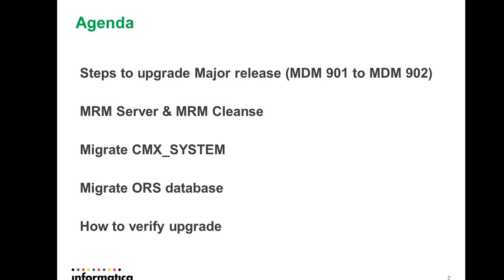The agenda we are going to cover is what steps are required to upgrade to a major release, and in this video we are going to cover MDM 9.0.1 to 9.0.2. As you know, every major release will have a server fix and a client fix. Applying server fix and client fix is just an easy thing — just apply the exe file. And for every major release there will be a database fix as well. The database fix has to be applied in CMX system as well as in ORS.